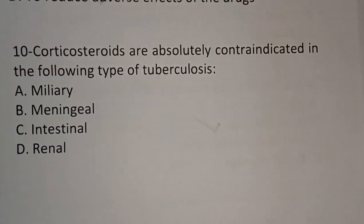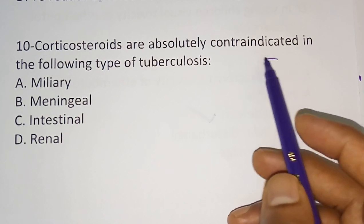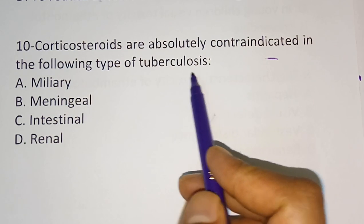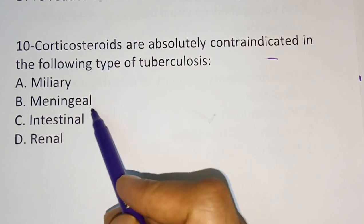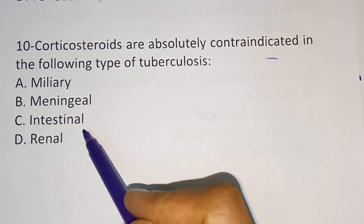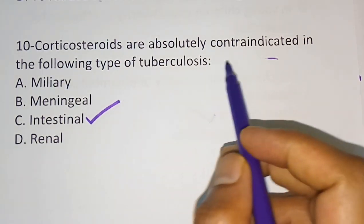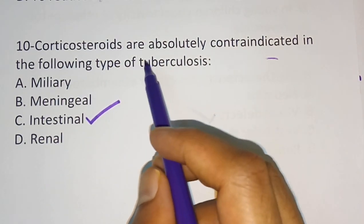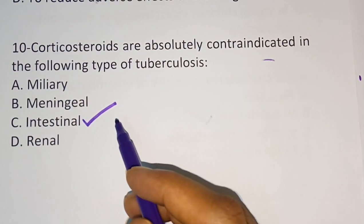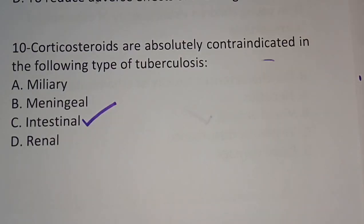Tenth question: corticosteroids are absolutely contraindicated in which of the following types of tuberculosis? Option A: miliary, option B: meningeal, option C: intestinal, option D: renal. The correct answer is intestinal — in cases of intestinal tuberculosis, corticosteroids are contraindicated.